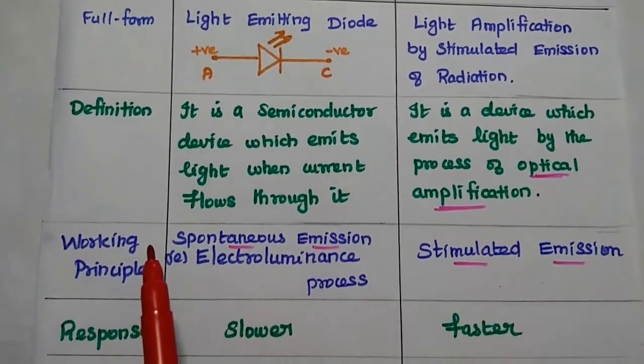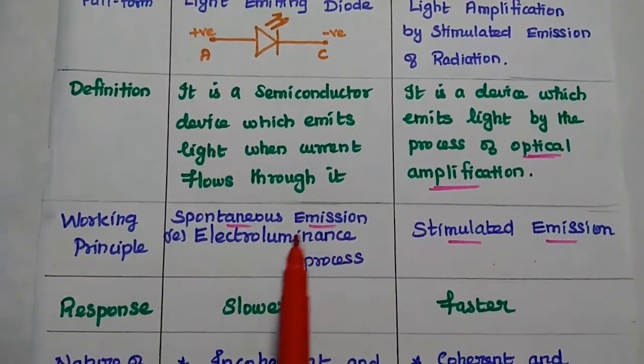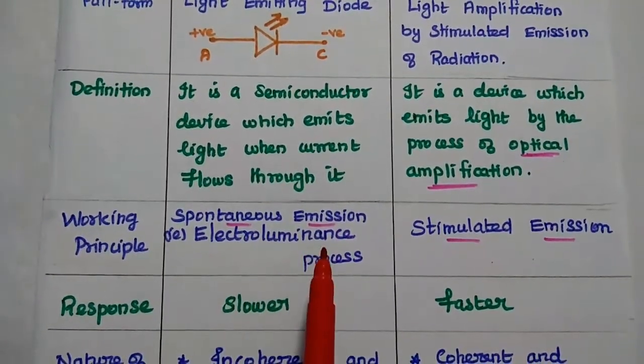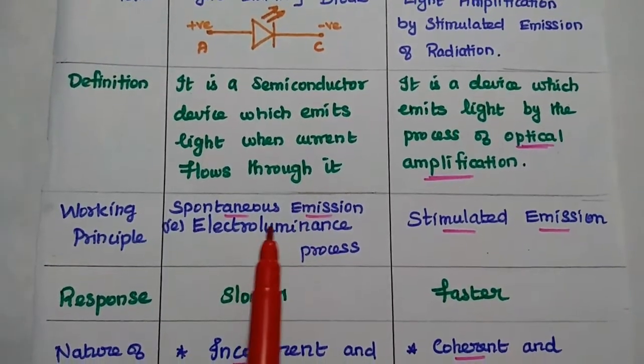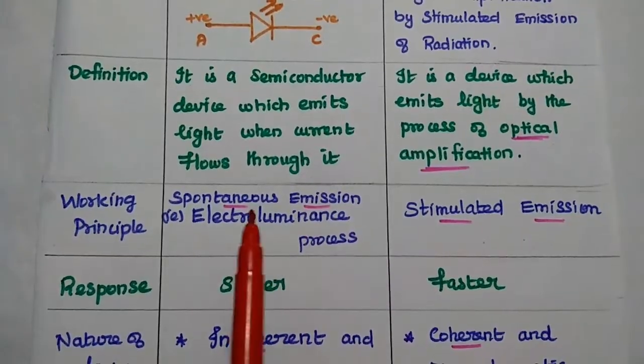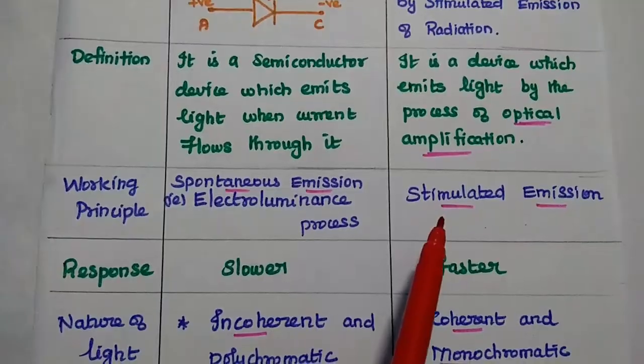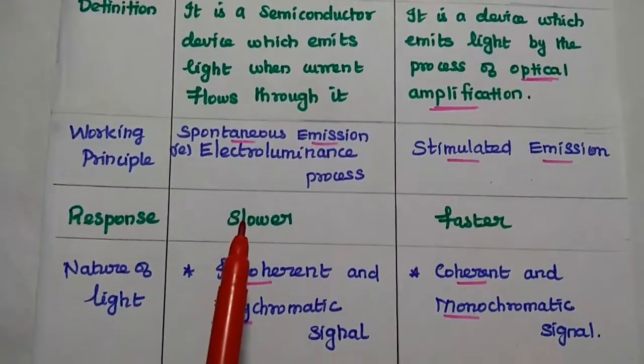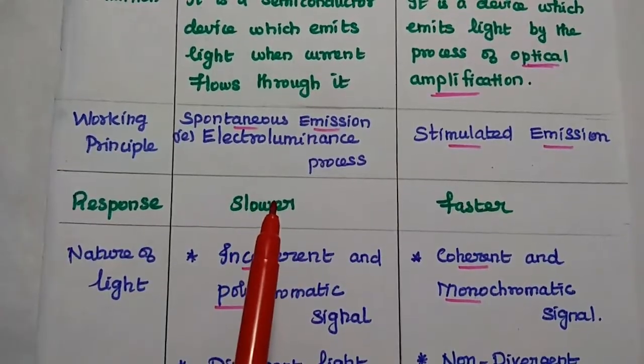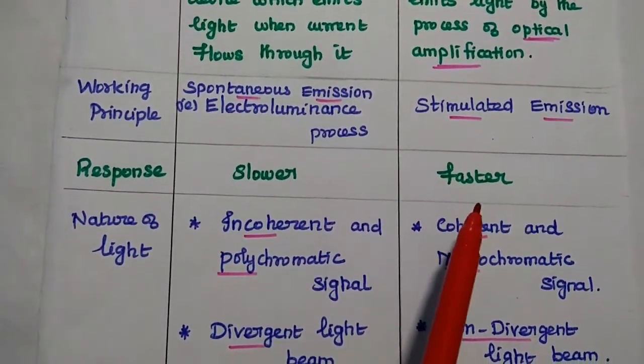The working principle of LED is based on spontaneous emission, that is electroluminous process. When current flows through it, it will produce light signal. But for laser, the working principle is based on stimulated emission. The response of LED is slower than laser. Laser gives faster response.